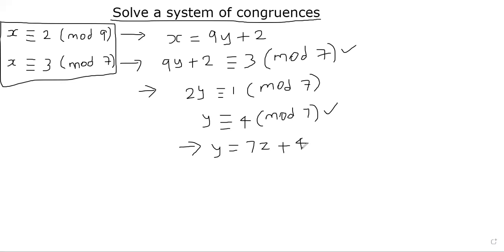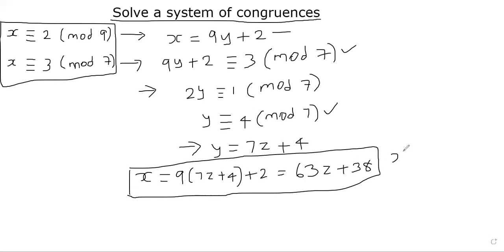And now we can go back to x here, because our goal is to find x. So we can rewrite the x as follows. We can see here that the solution is nothing but what is the meaning of this in terms of congruence. We can rewrite it as x is congruent to 38 mod 63.